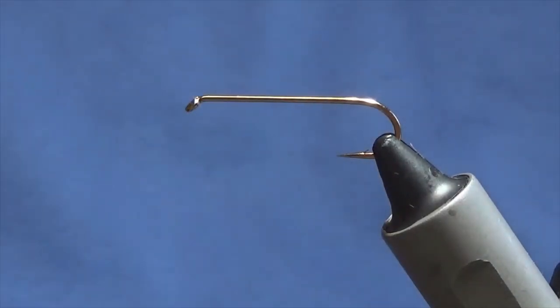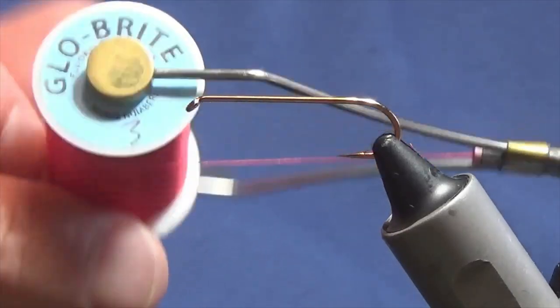It's going to be a good pattern to have in your box. What I'm going to do is start off with a Glo-Brite floss number three in this nice red.